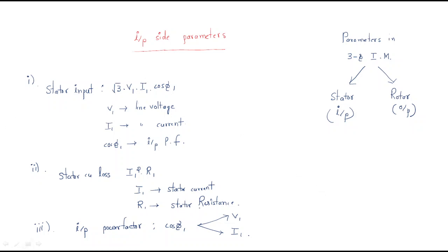So these are the general formulas for the input side parameters: stator input, stator copper losses, and input power factor.